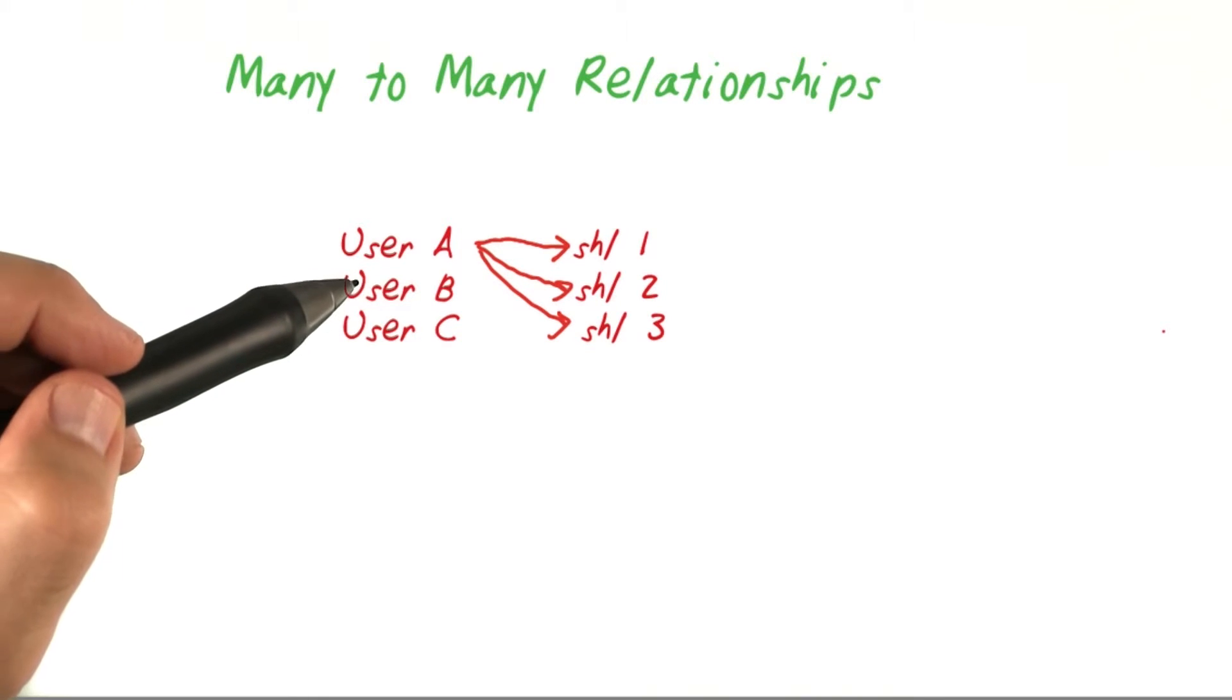Each user would have a collection of shopping lists they own and have access to. And each of these shopping lists would have exactly one person who could add them, the owner. But that would be a pretty lame app.